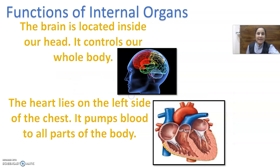Brain, heart, lungs, stomach are some examples of internal organs jo humari skin ke neeche hote hai. The brain is located inside our head. Our heart is on the left side of our chest. It pumps blood to all parts of the body, and our body's blood circulates through our heart. Clear?